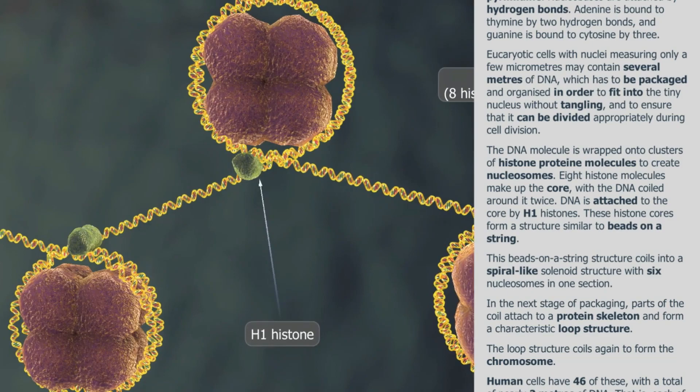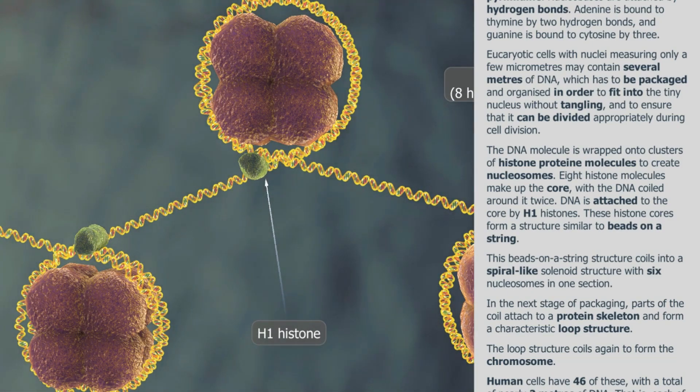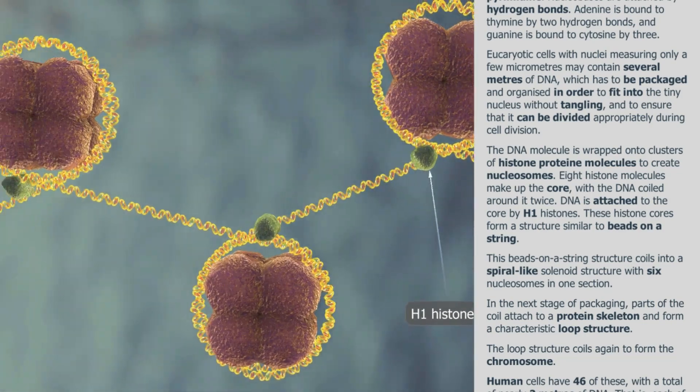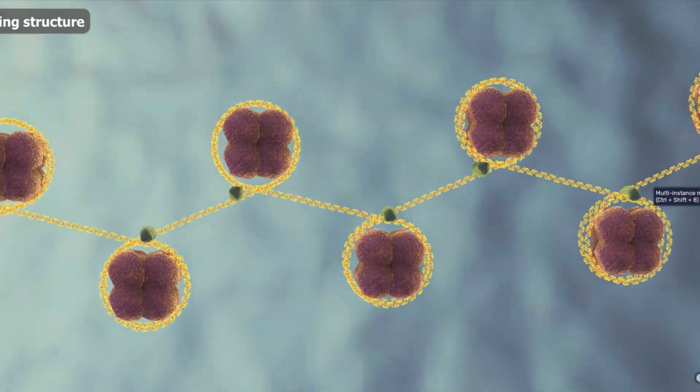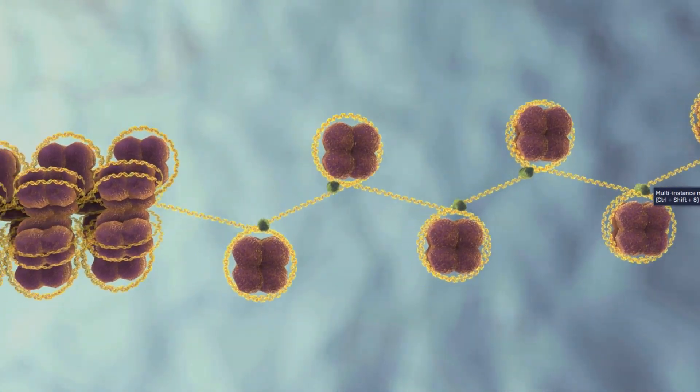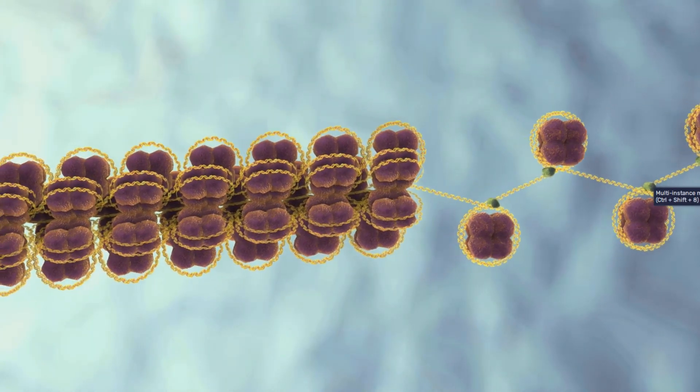DNA is attached to the core by H1 histones. These histone cores form a structure similar to beads on a string. This beads on a string structure coils into a spiral-like solenoid structure, with six nucleosomes in one section.